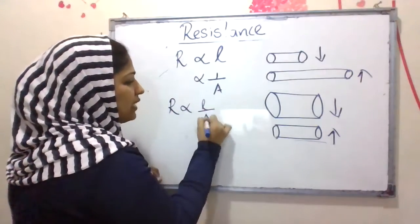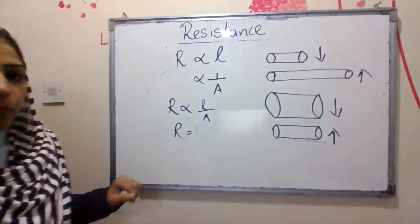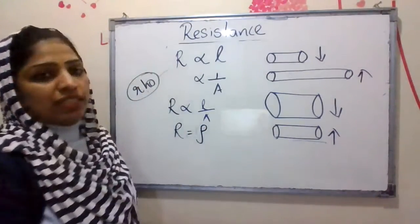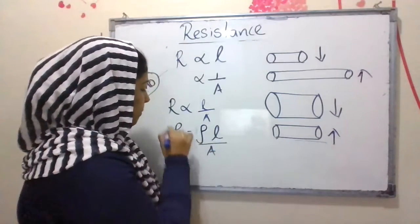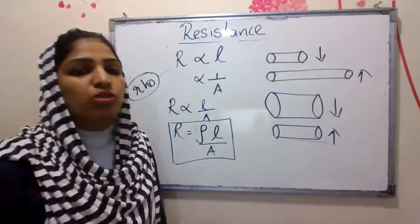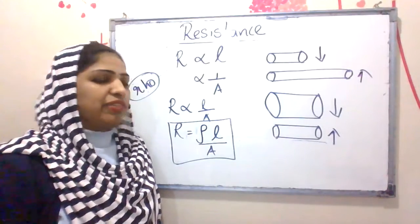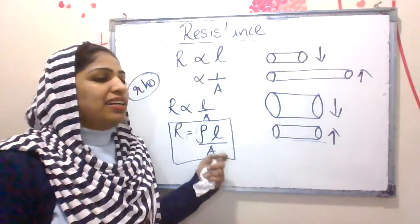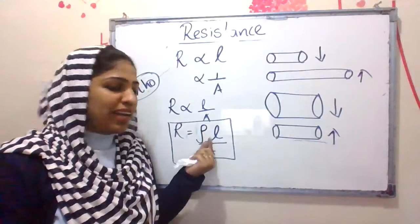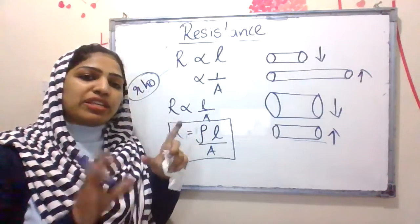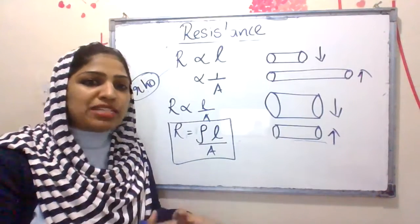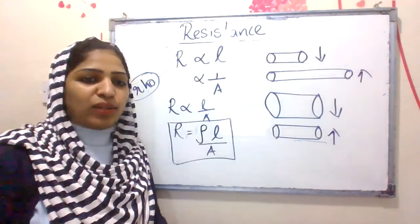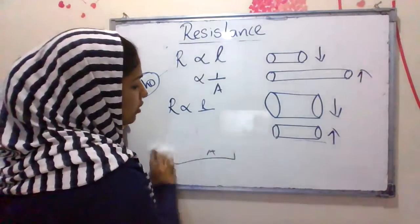R is proportional to L divided by A. Introducing the constant of proportionality rho, we get R equals rho L divided by A. This is the second formula for resistance. Rho is called resistivity. Resistivity is independent of the length or the area of cross-section, whereas resistance depends on the length and area of cross-section.